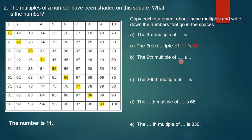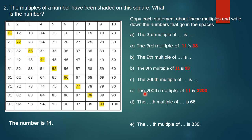The ninth multiple of 11 is 99. For the 200th multiple of 11: you cannot find it from the square, but when you multiply 200 by 11 it gives you 2,200. Option D: the nth multiple of ___ is 66. The number is 11. We need to find 11 multiplied by what number gives 66 — divide 66 by 11, which gives 6. So the sixth multiple of 11 is 66.